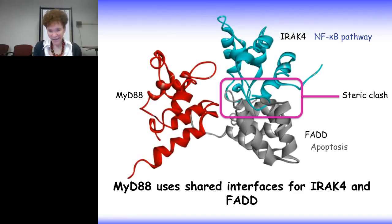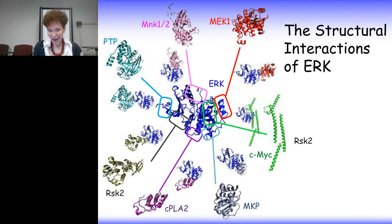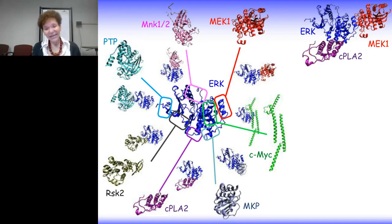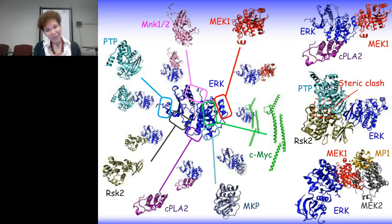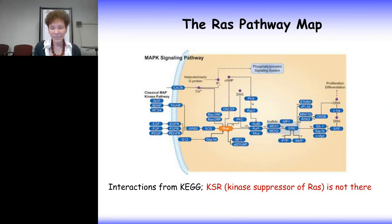The TIR domain of MyD88 interacts with the TIR domain of the toll-like receptor — TLR4 in this case — but this interaction competes with MyD88-MyD88 interaction. We can see such competing interactions: MyD88 interacting with IRAK4 and FADD cannot take place at the same time because of steric hindrance. For the ERK kinase, ERK can interact with MEK1 and PLA2 at the same time. However, MEK1 cannot interact with MP1 and MEK2 simultaneously because they use a shared binding site on MEK1. Similarly, ERK cannot interact with PINTP and RSK2 at the same time — not because they share an interface, but because of steric clash between these two proteins.